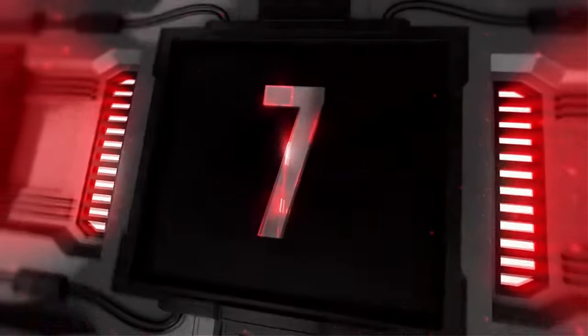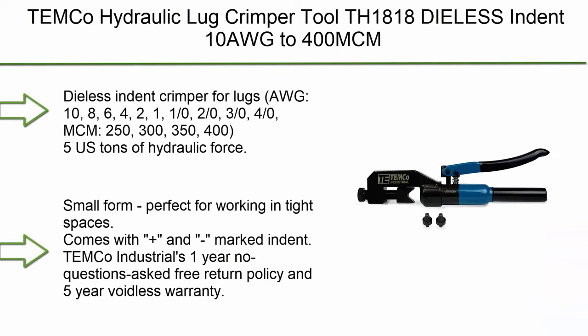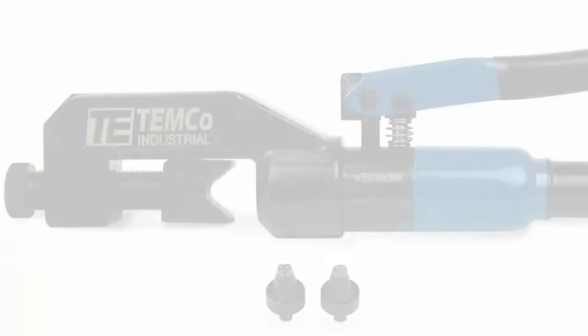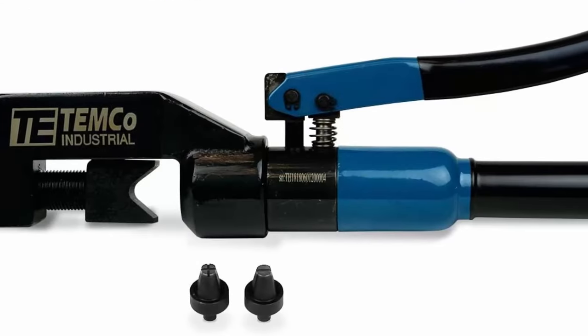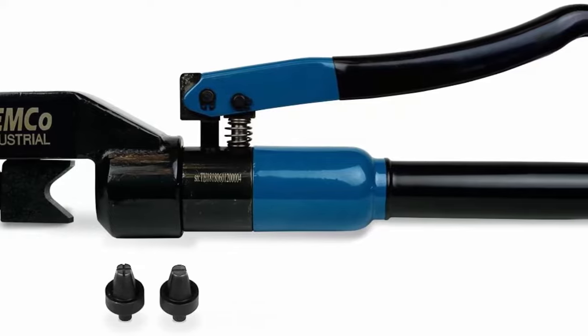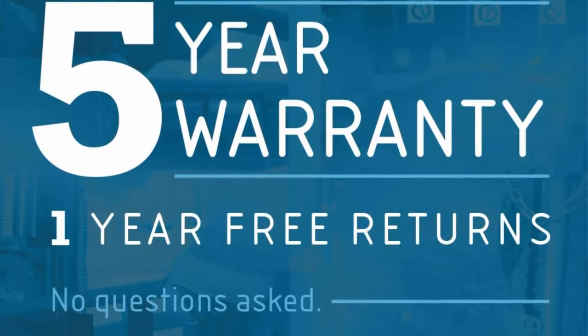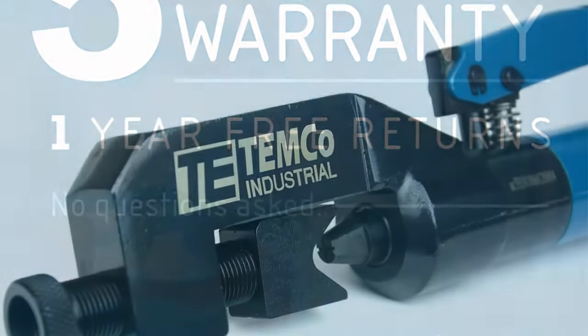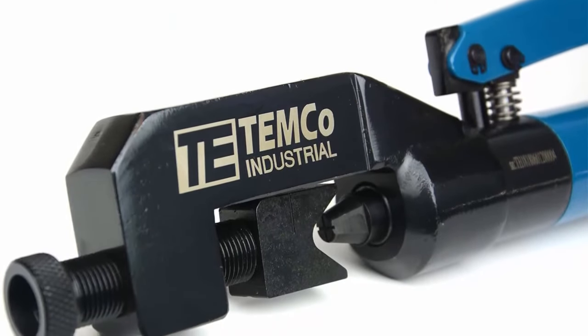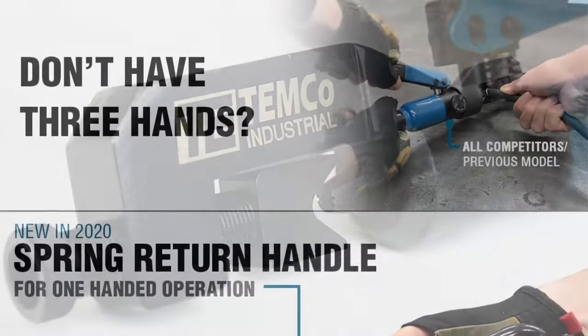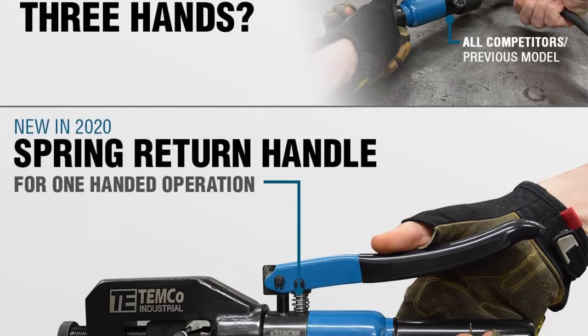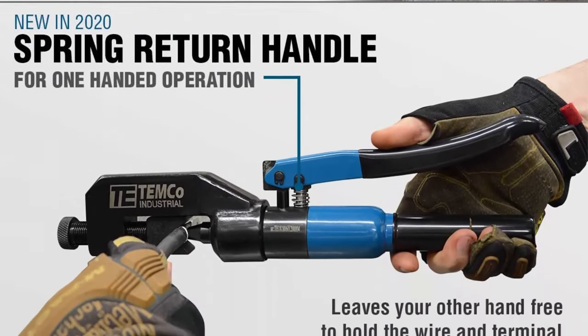Top 7: Temco Hydraulic Lug Crimper Tool TH1818, Dialess Dent, 10 AWG to 400 MCM Electrical Battery Terminal Cable Wire, 5-Year Warranty. Dialess Dent Crimper for Lugs - AWG 10, 8, 6, 4, 2, 1, 1/0, 2/0, 3/0, 4/0, MCM 250, 300, 350, 400. 5 US tons of hydraulic force.